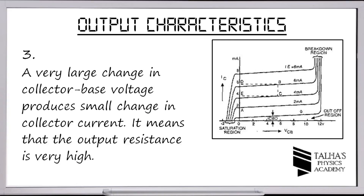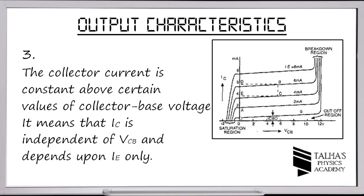Point 3: a very large change in collector-base voltage produces only a small change in collector current, meaning the output resistance is very high. Point 4: the collector current is constant above a certain value of VCB, meaning IC is independent of VCB and depends only on IE above that threshold.